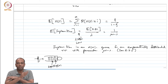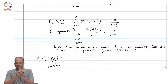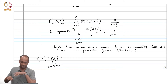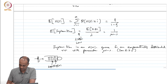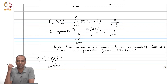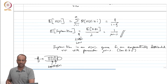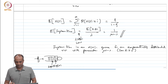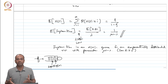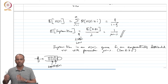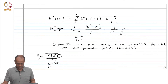We know from probability that a geometric sum of exponentials is an exponential random variable. Using that, we can show that the system time in an M/M/1 queue is an exponential random variable with parameter mu times (1 minus rho), which is mu minus lambda. So it is not surprising that the expected time is 1 over mu minus lambda — the system time random variable is exponentially distributed with parameter mu minus lambda.